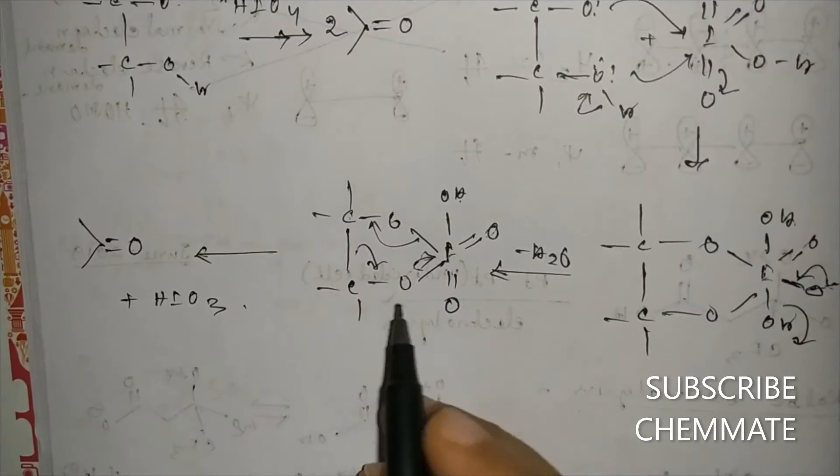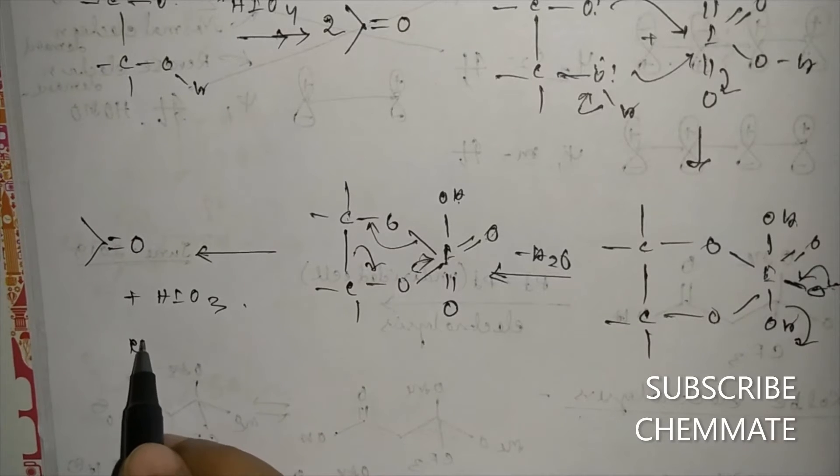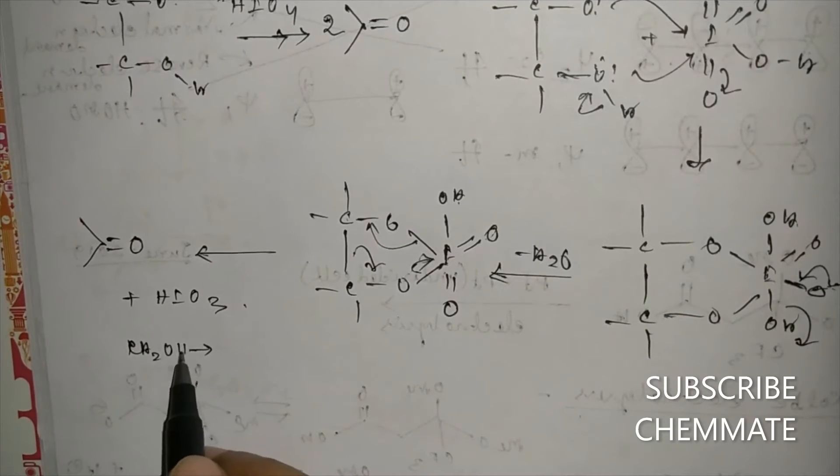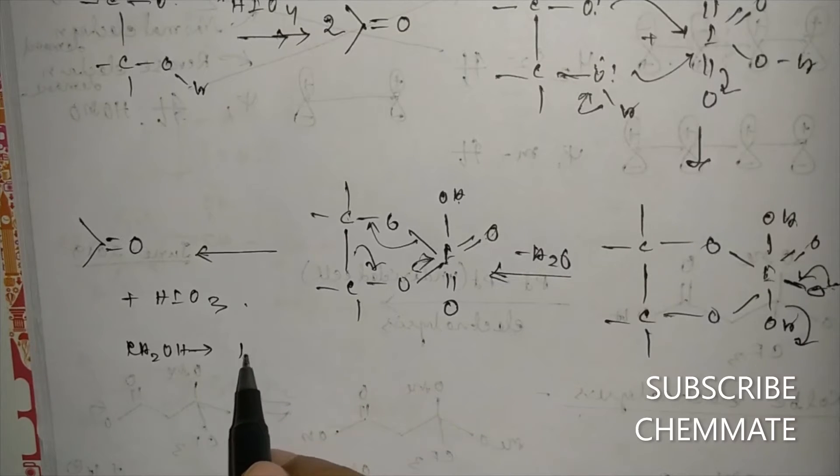This is the mechanism: HIO4 converts CH2OH to HCHO. The carboxylic acid group will convert to carbon dioxide. So that completes the mechanistic picture for how HIO4 cleaves vicinal diols.